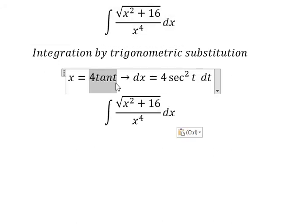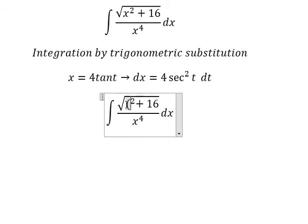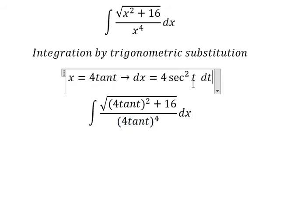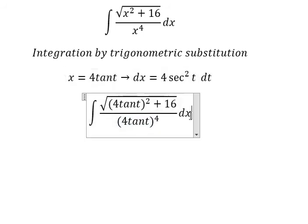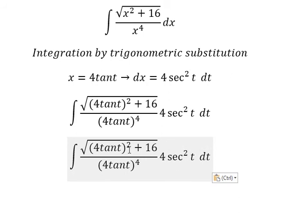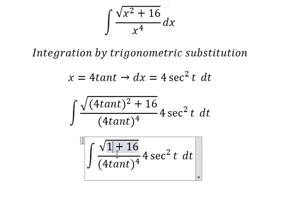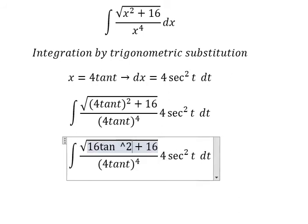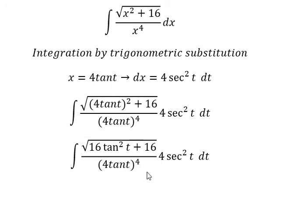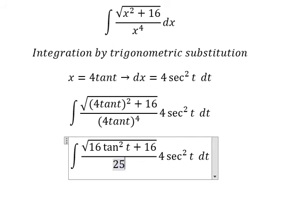I will substitute this in here. For dx, we substitute with 4 sec²(t) dt. This gives us 16 tan²(t) in one part, and 256 tan⁴(t) in another part.